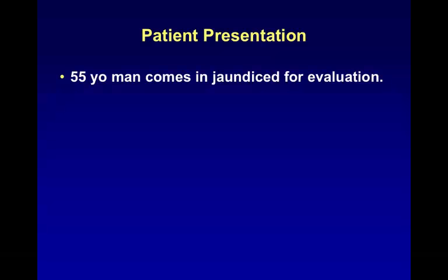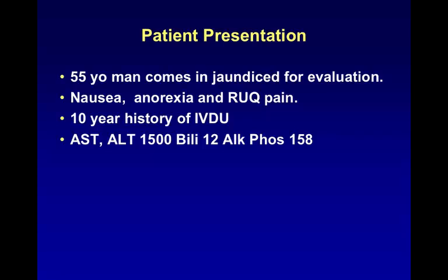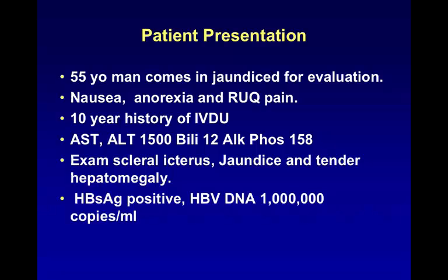As a starting point, I'd like to present a patient: a 55-year-old man who comes in with jaundice for evaluation. He has typical symptoms of hepatitis — nausea, anorexia, and right upper quadrant pain. He has a history of intravenous drug use over the last 10 years. He has a typical rise in his liver tests with an AST and ALT of 1,500, bilirubin of 12, and near-normal alkaline phosphatase. On exam, he's icteric, with jaundice and tender hepatomegaly. The serologies we'll be talking about today are his hepatitis serologies, which are typical of acute infection with surface antigen positive and a viral DNA level of 1 million copies.